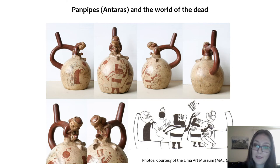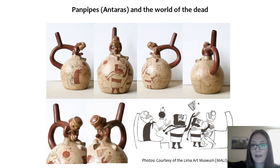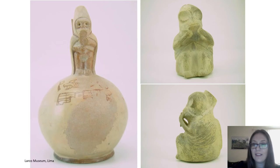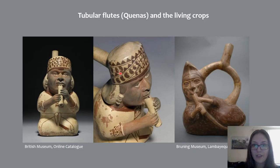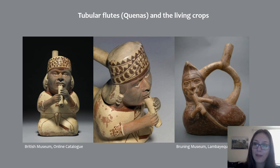Pan pipes are usually related in Moche art to the world of the dead — many scenes show pan pipes being played in the underworld. Here characters are fighting over a pan pipe falling from the sky, and they are in the world of the dead. Dead characters playing pan pipes are well documented. Pan pipes are very well known for their correlation with the world of the dead and rituals for the dead in the Andean world to this day. This opposition between pan pipes and tubular flutes is very classic in Andean cosmologies.